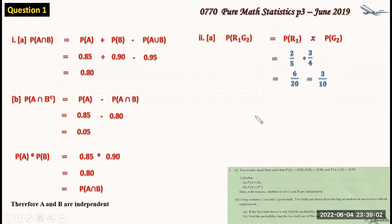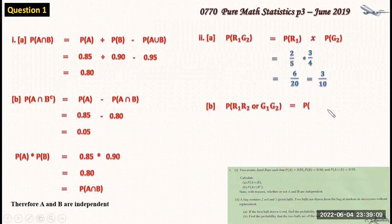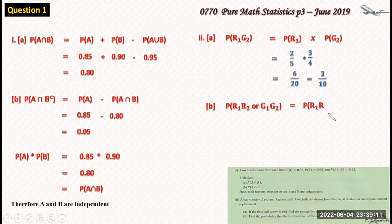Now we find the probability that the two balls are of the same color. So there's a probability of red one, red two, or green one, green two. So the probability of red one, red two plus probability of green one, green two.